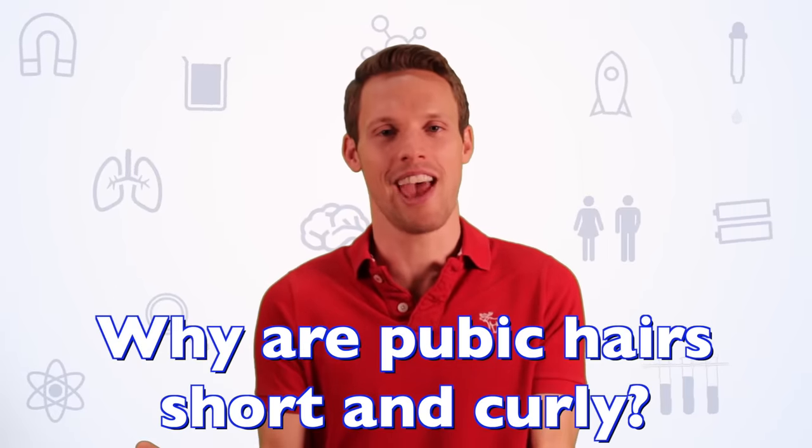The important question, the big one. Why are pubic hairs short and curly? They are curly because they have a different shape to the rest of the hair on your body, that is normally round in cross-section. But pubic hair is squeezed by the hair follicle, which makes it oval in cross-section and causes it to curl.